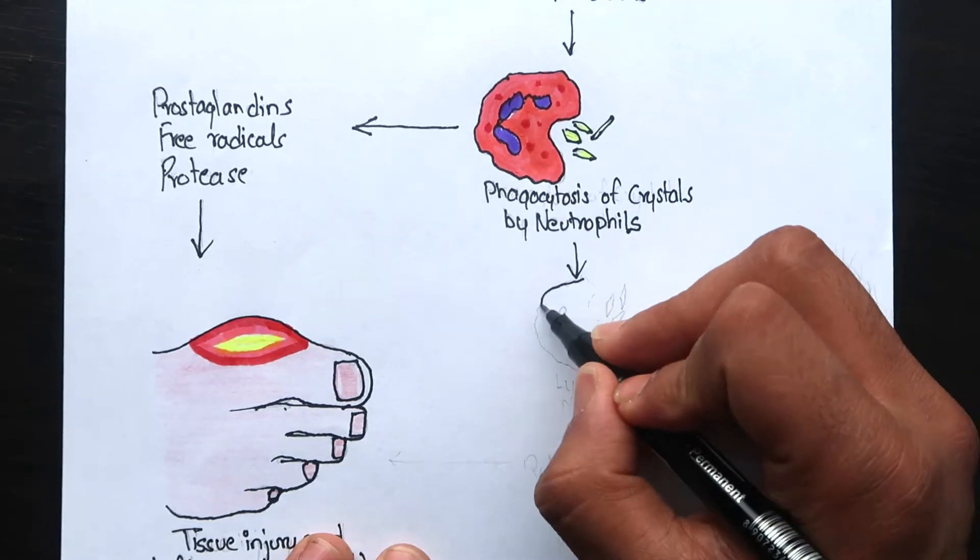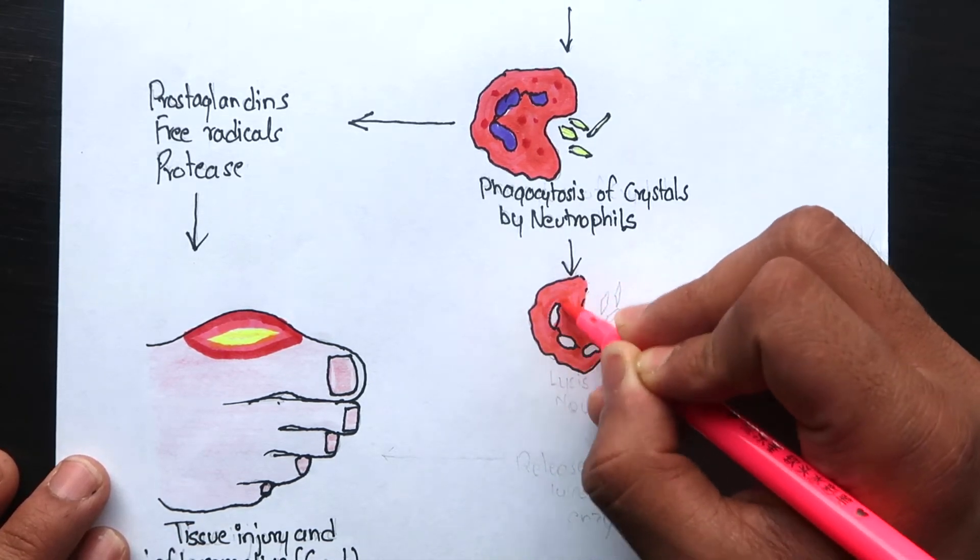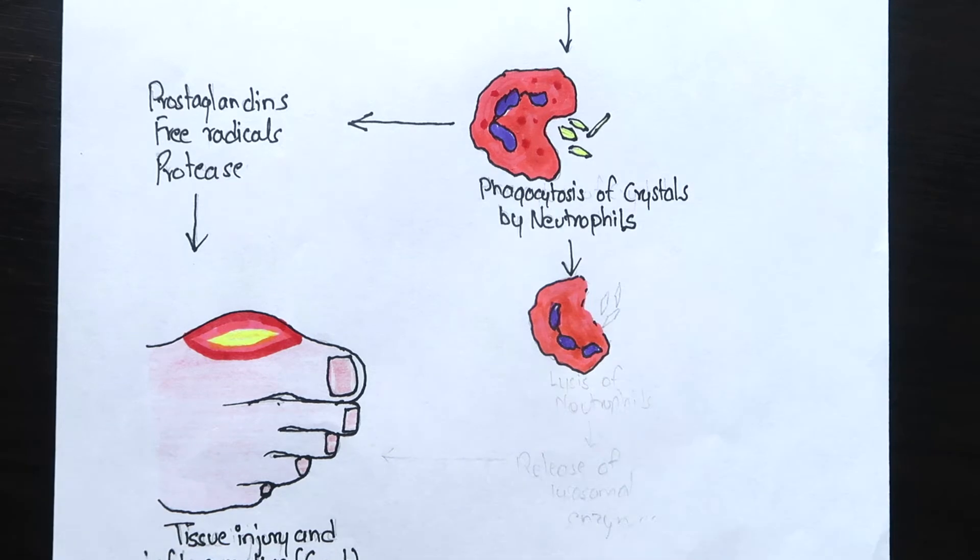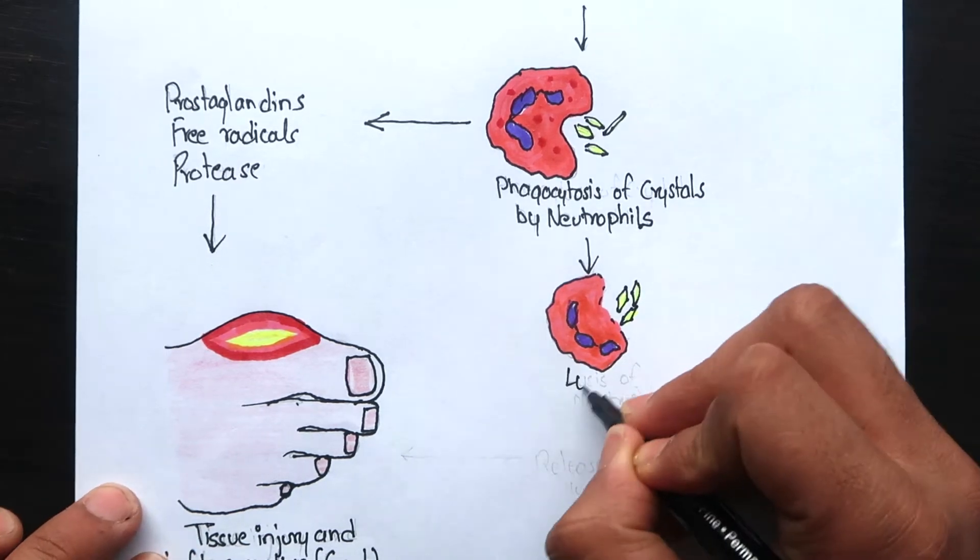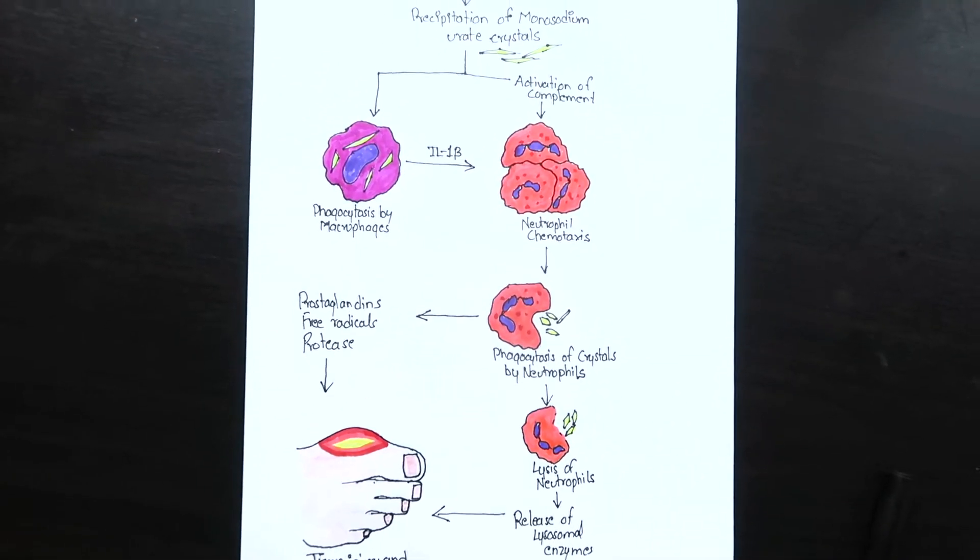The neutrophils will get lysed due to the solid sharp edges of the crystals and release lysosomal enzymes that will do further damage to the joints. So this is the pathogenesis of acute gouty arthritis.